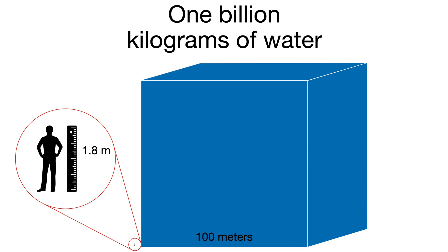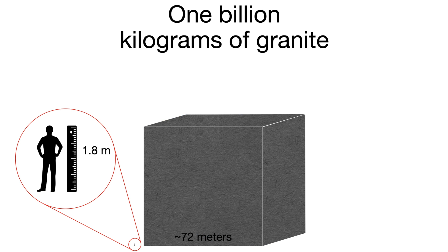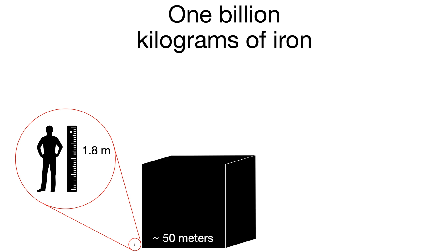Here is what a billion kilograms of water would look like. It would be a cube, a hundred meters in every direction. This is what a billion kilograms of granite would look like, and this is what a billion kilograms of iron would look like. So these are three of the more common things that make up our planet.